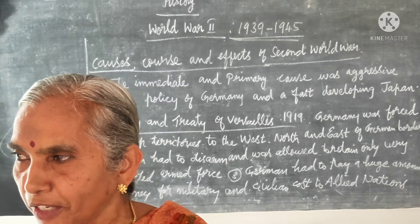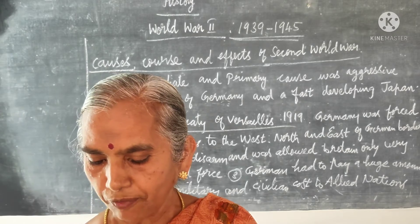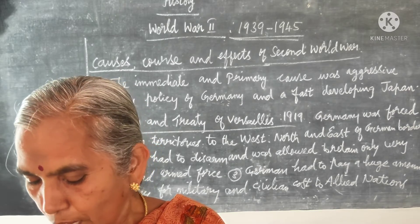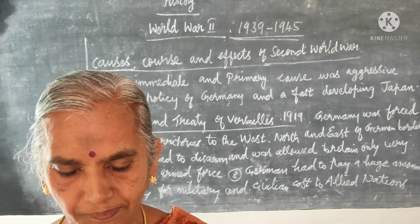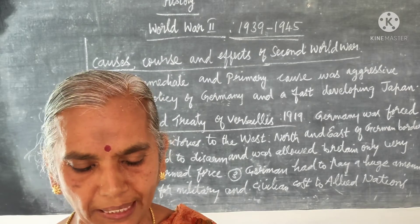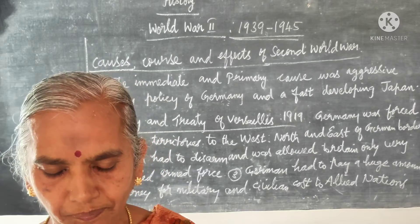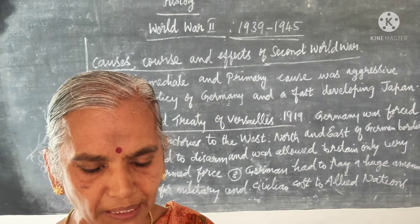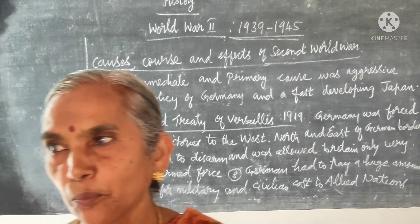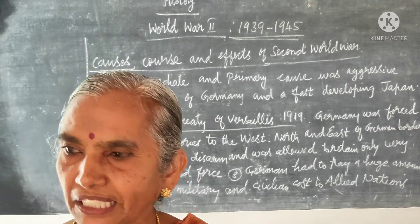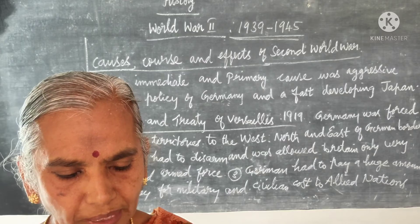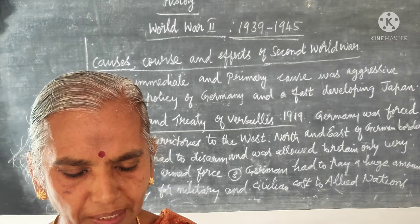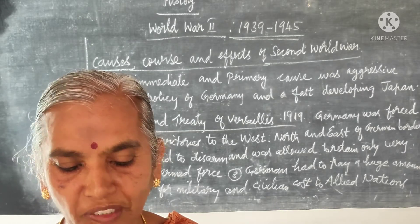The Battle of El Alamein took place in 1942. German forces under General Rommel attacked North Africa rapidly, leaving the British with only Egypt. The Allied forces counter-attacked and defeated the German and Italian forces at El Alamein in North Africa. The German army was chased across the desert, out of North Africa, which provided the base for the Allied powers to invade Italy.